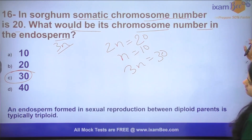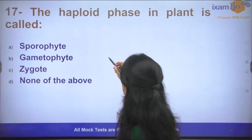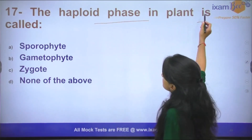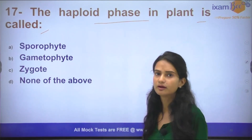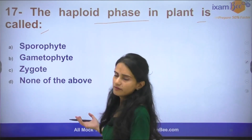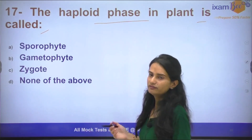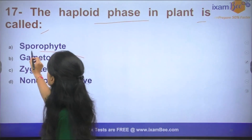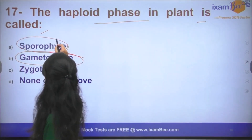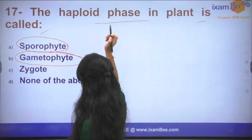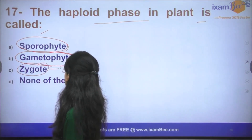Question number 17: The haploid phase in the plant is called what? In our plant there are majorly two phases: gametophyte and sporophyte. The haploid phase is gametophyte, whereas sporophyte is the diploid phase. The zygote is also 2N.